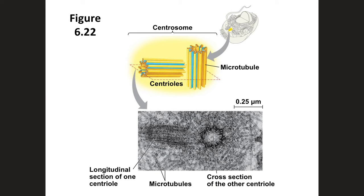Centrosomes and centrioles are present in most animal cells and protists, but not plant cells. In animal cells, microtubules grow out from a centrosome near the nucleus, and it is used in cell division. The centrosome consists of both centrioles at a 90-degree angle. The centrosome has a pair of centrioles, each with nine triplets of microtubules arranged in a ring.